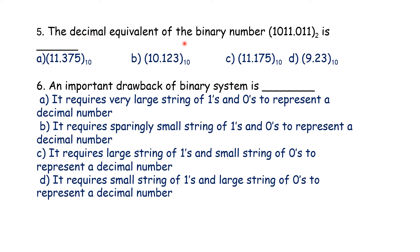The decimal equivalent of a given binary number — if we convert from binary to decimal, base 2 is binary, base 10 is decimal, base 8 is octal. To convert binary to decimal, we follow: 1 into 2 power 3, plus 0 into 2 power 2, plus 1 into 2 power 1, plus 1 into 2 power 0, plus 0 into 2 power minus 1.